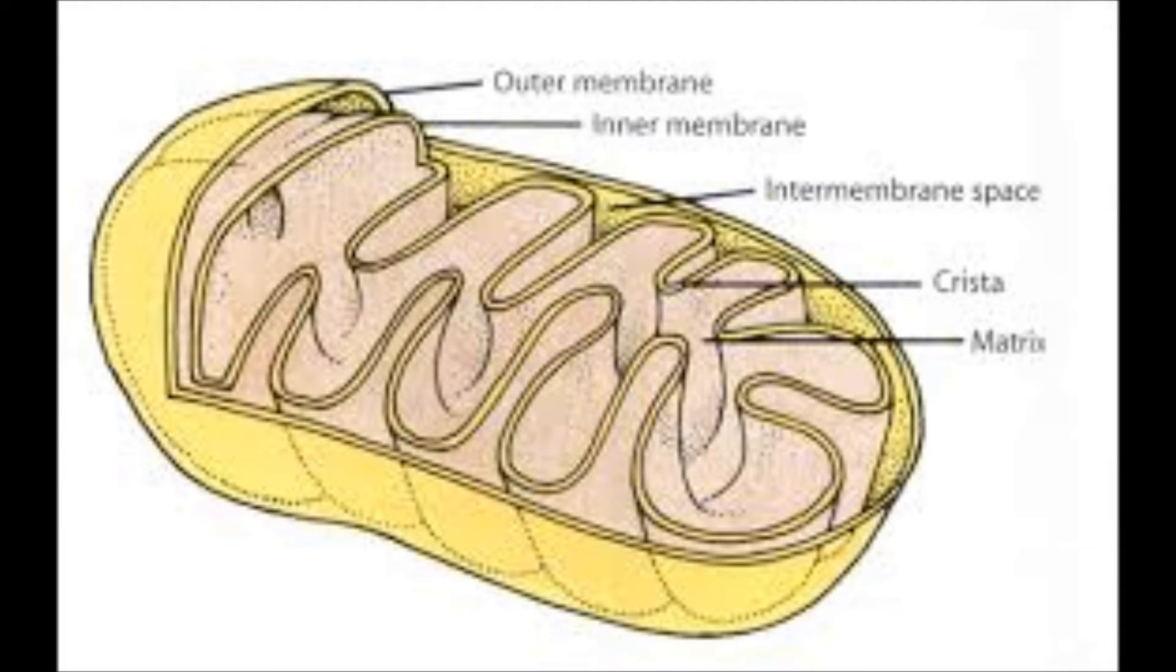Mitochondria create energy to power the cell. It has two membranes. The outer one acts like a shell. The inner membrane folds upon itself to increase its surface area. Cellular respiration is the function it will undertake.